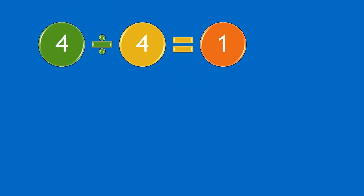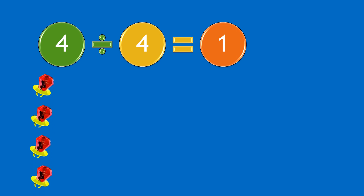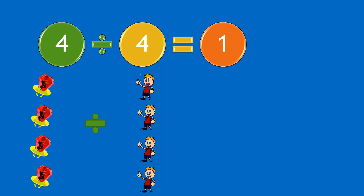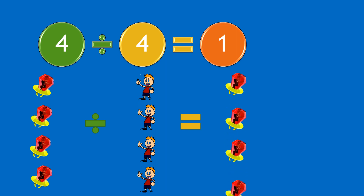Let's start with our first question: four divided by four equals one. So if you have four ring pops and divide them by four boys, each boy will receive one ring pop. Yep.